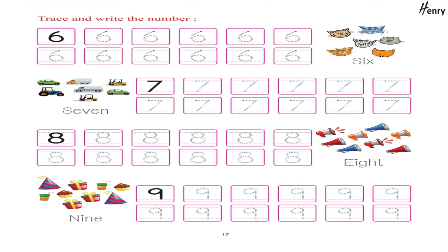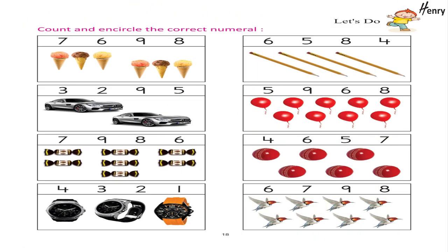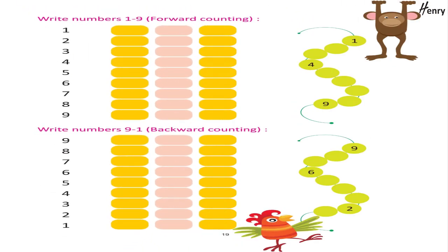Trace and write the numbers 6, 7, 8, and 9. Let's do — count and encircle the correct numeral. Write numbers 1 to 9 for forward counting. Write numbers 9 to 1 for backward counting.